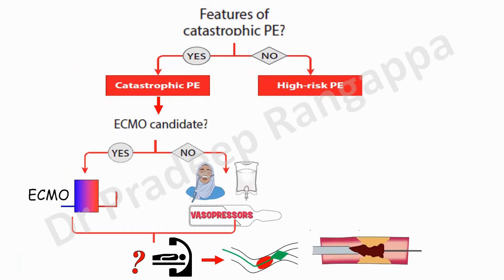Systemic thrombolysis is still considered, but this algorithm places greater emphasis on the cath lab — catheter-directed thrombolysis, thrombectomy, or even surgical intervention — as the preferred approach.